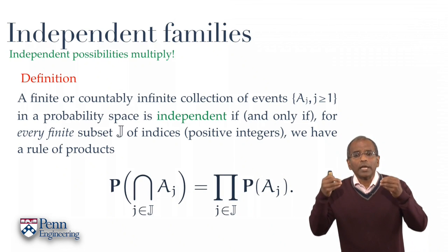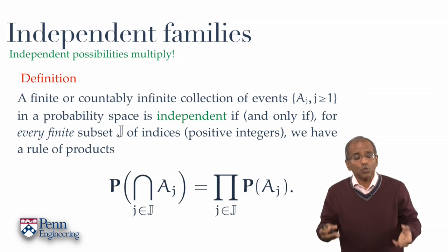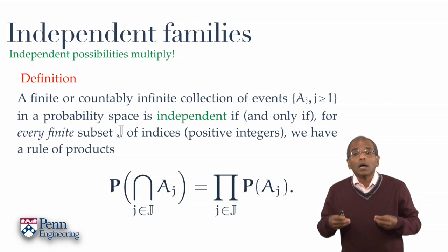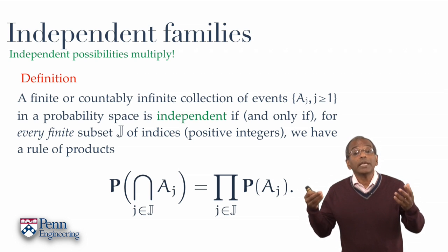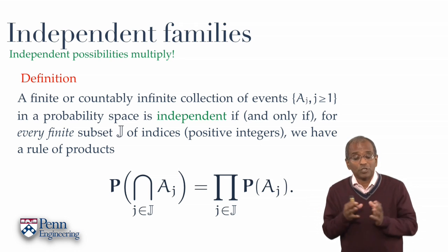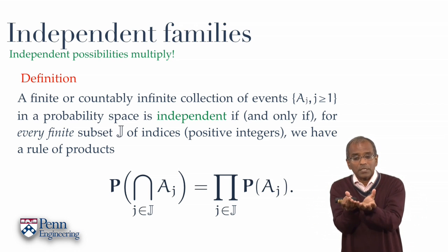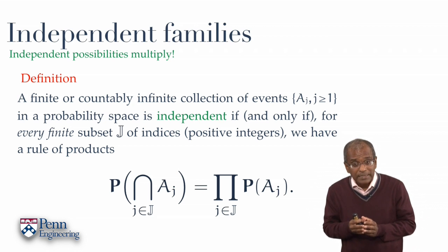Let us say A1, A2, A3, A4, and so forth, is a generic family, either finite or possibly even countably infinite, of events. We will say that such a family of events is independent,